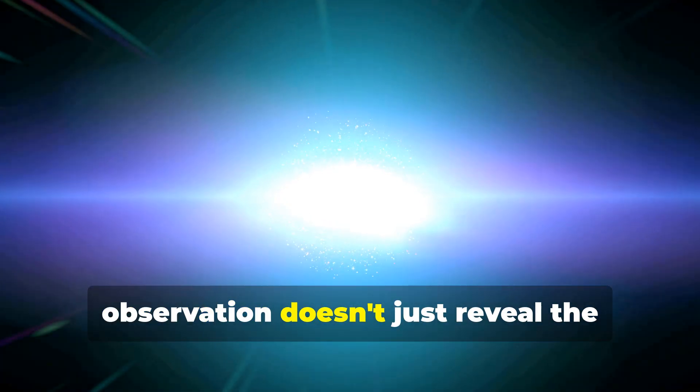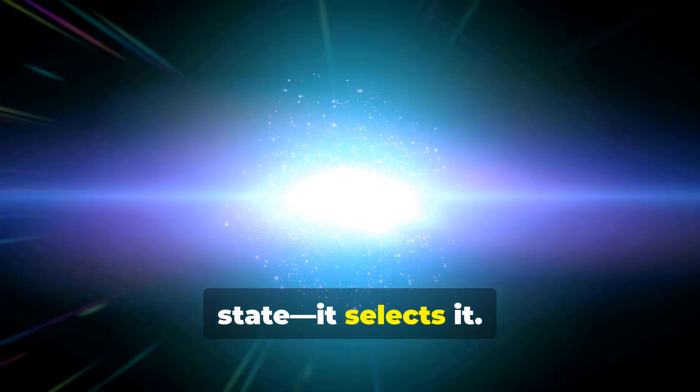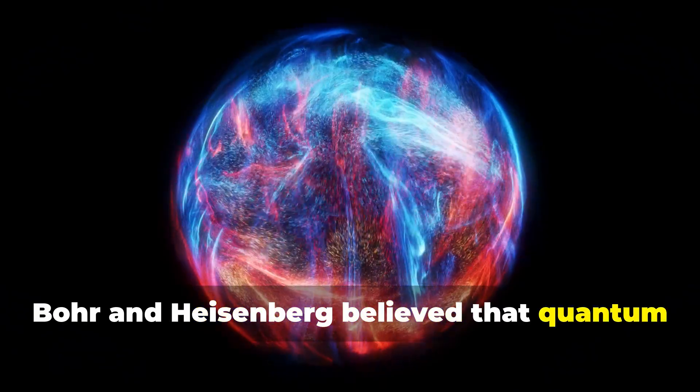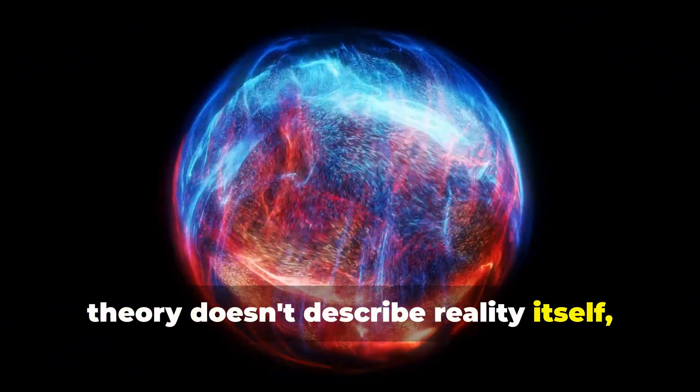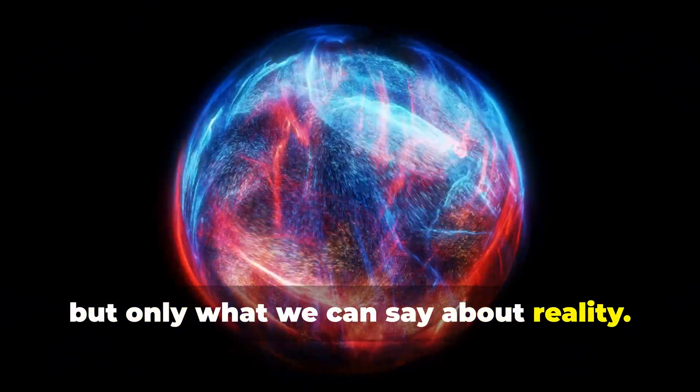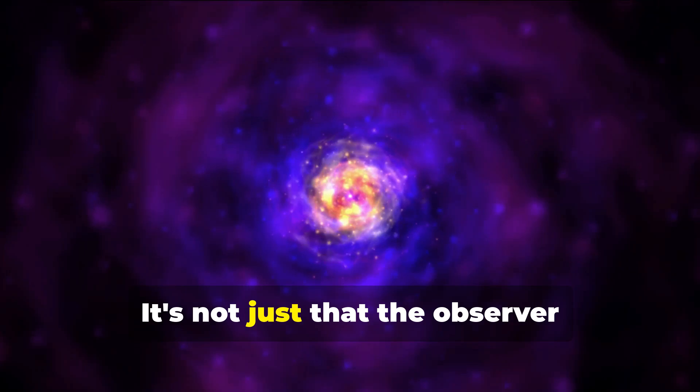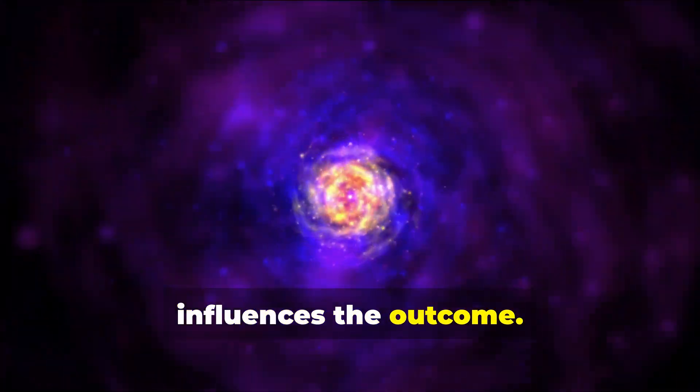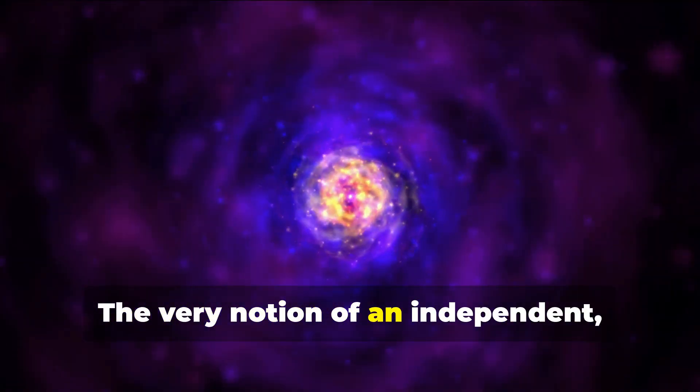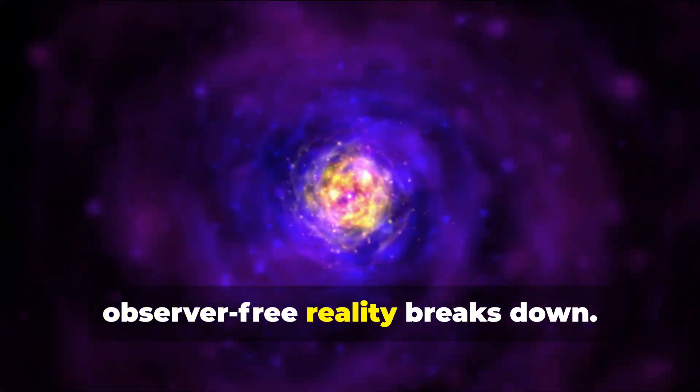But here's where it gets wild. The act of observation doesn't just reveal the state, it selects it. Bohr and Heisenberg believe that quantum theory doesn't describe reality itself, but only what we can say about reality. It's not just that the observer influences the outcome. The very notion of an independent, observer-free reality breaks down.